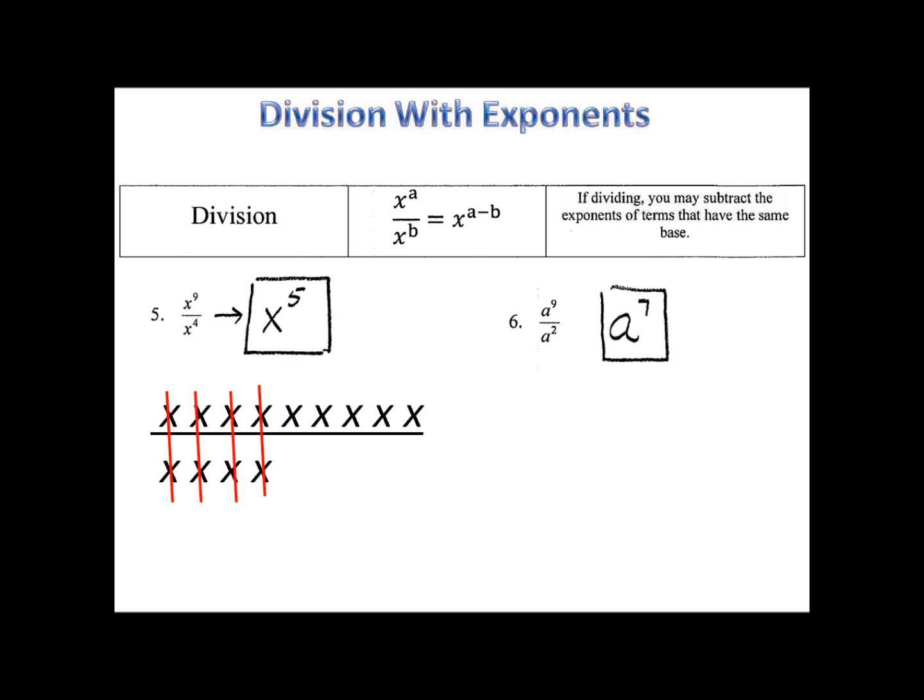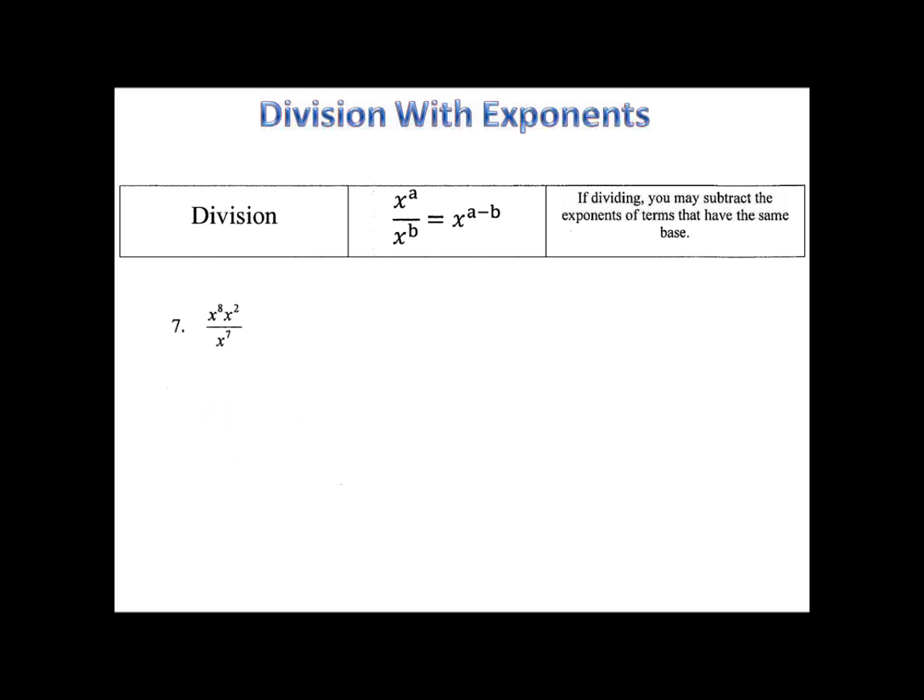Now let's look at something a little more exciting. Here we have on example 7, multiplication and division put together into one problem. Let's start at the top. x to the eighth times x to the second. That gives me x to the tenth. And I have x to the seventh down on the bottom. Now I'm dividing. Now I subtract. 10 minus 7 is 3. So x to the third is my simplified fraction.